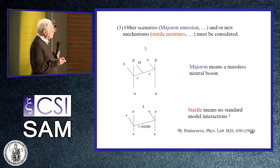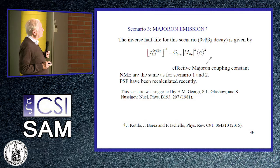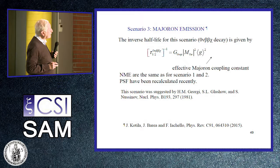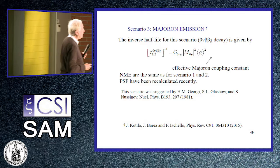Let us investigate these possibilities in more detail. First, majoron emission: the process denoted by zero-nu double beta chi decay. The half-life has been calculated because we calculated the phase-space factor and the nuclear matrix elements, so we can put a limit on the effective majoron coupling constant. The nuclear matrix elements are the same as scenarios one and two, but the phase-space factors are different. This scenario was originally suggested by Georgi, Glashow, and Nusinov.